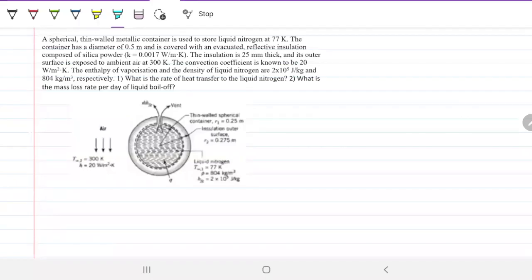So, we have a sphere with thin metallic walls and nitrogen inside. Nitrogen is at 77 Kelvin, so about minus 200 Celsius. The container has a diameter of 0.5 and is covered with an evacuated reflective insulation composition of silica powder. Silica is simply silicon oxide, right? SiO2.